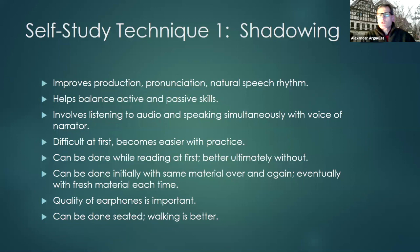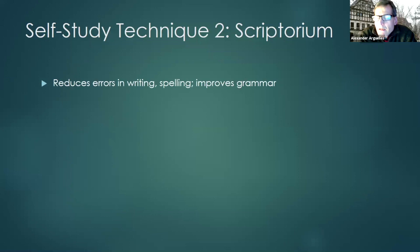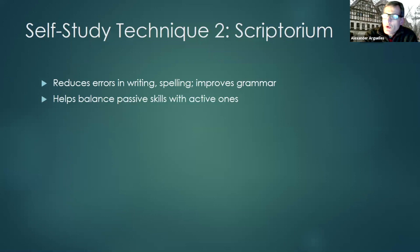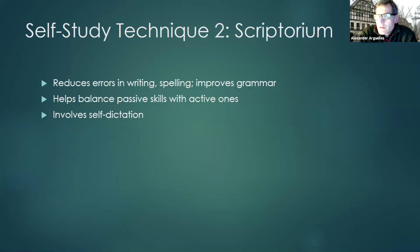That's one technique — for the speaking and listening skills, balancing them out. The second technique I call scriptorium. Scriptorium is a medieval monastery where monks used to copy texts, and this is a way of copying texts that helps you do a number of things. It's a way of reducing errors in writing and spelling, and overall improving your grammar. Just as shadowing is essentially listening and repeating simultaneously, scriptorium is basically a self-dictation — dictating a text to yourself and copying it down in a number of stages.